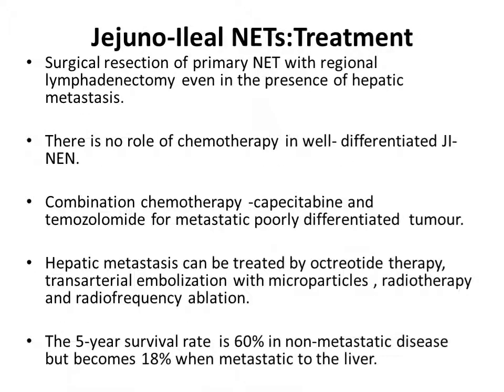For treatment, surgical resection of the primary NET with regional lymphadenectomy, even in the presence of hepatic metastasis, is recommended. There is no role of chemotherapy in well-differentiated jejunoileal neuroendocrine neoplasia. Combination chemotherapy like capecitabine and temozolomide is used for metastatic poorly differentiated tumors. Hepatic metastasis can be treated by octreotide therapy, transarterial embolization with microparticles, radiotherapy, and radiofrequency ablation. The 5-year survival rate is 60% in non-metastatic disease, but becomes 18% when metastasis is present.